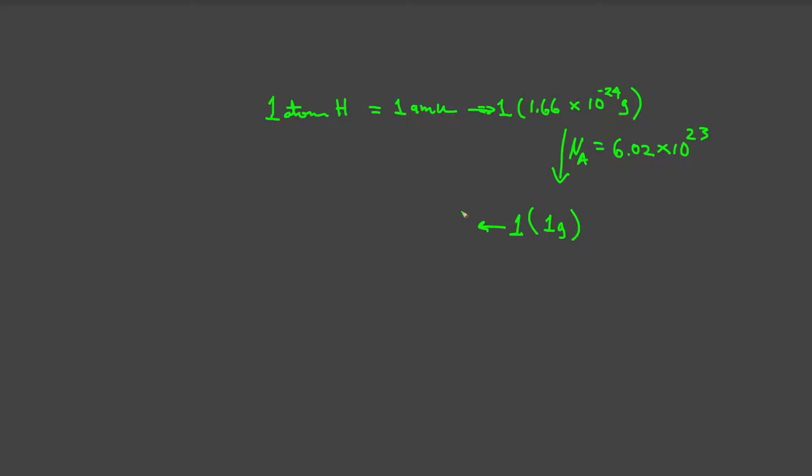And so, let's now translate that. So, 1 AMU is equivalent to one gram, or will give you one gram, when scaled up by Avogadro's number.